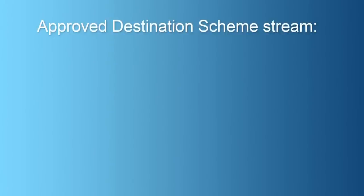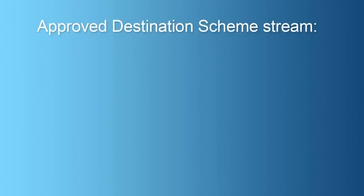The fourth stream, the approved destination scheme stream, facilitates the travel of organised tour groups from the People's Republic of China to Australia. The approved destination scheme provides streamlined travel opportunities for Chinese tour groups while ensuring the integrity of Australia's visitor visa program.